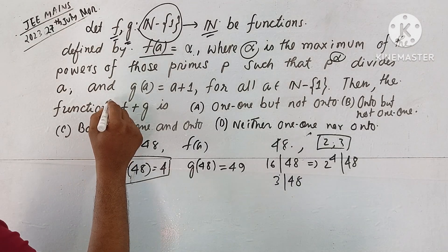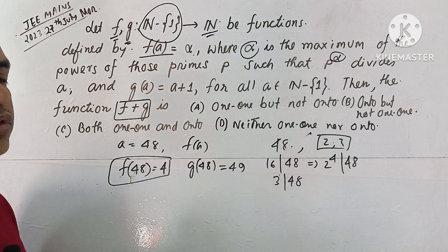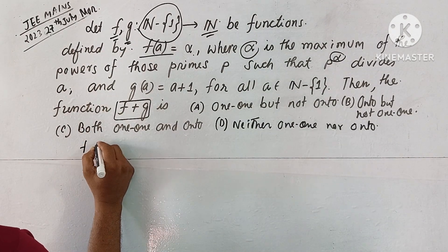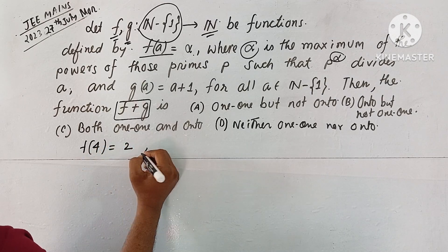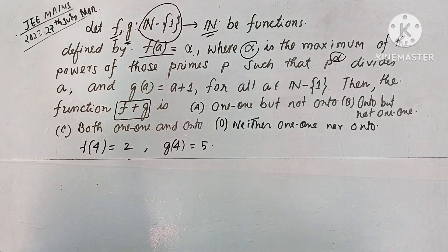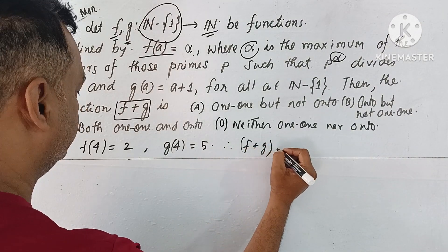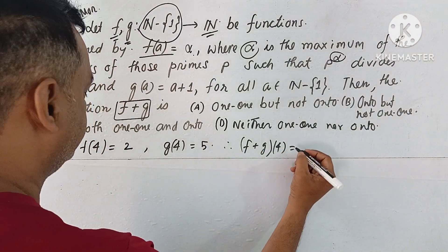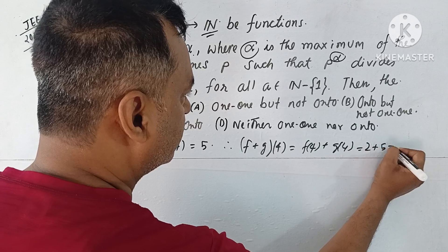Now we need to discuss whether F plus G is one-one or onto. Let's check: F(4) equals 2 because 2 squared divides 4. G(4) equals 5. Therefore F+G of 4 equals F(4) plus G(4) equal to 2 plus 5, which equals 7.